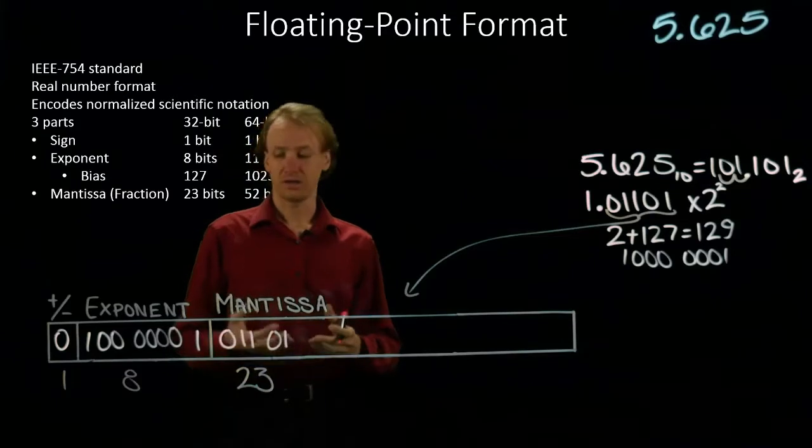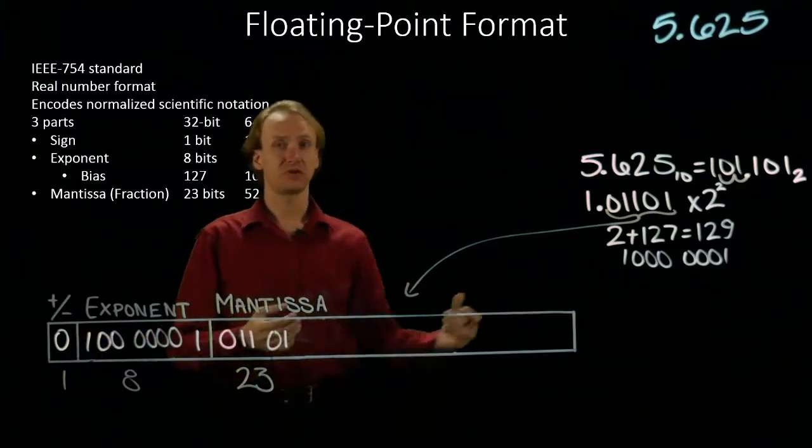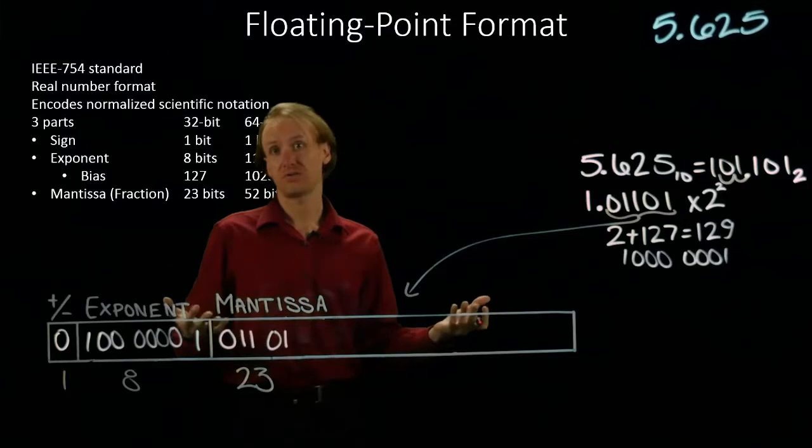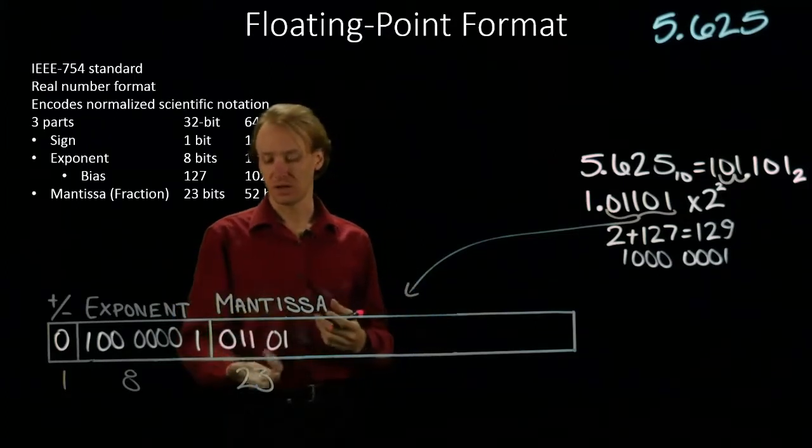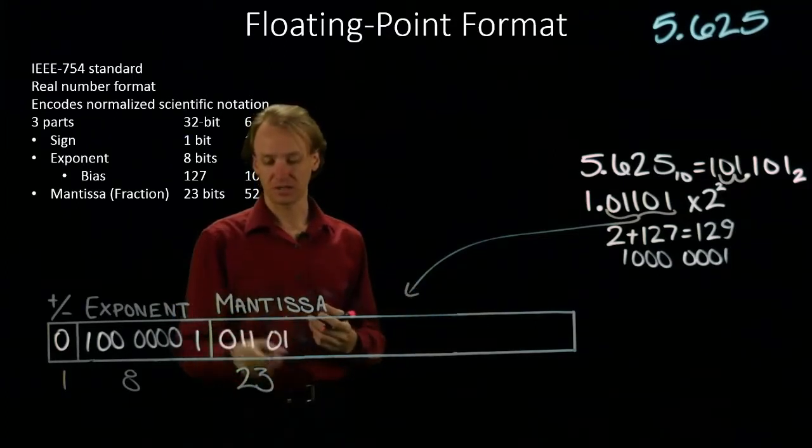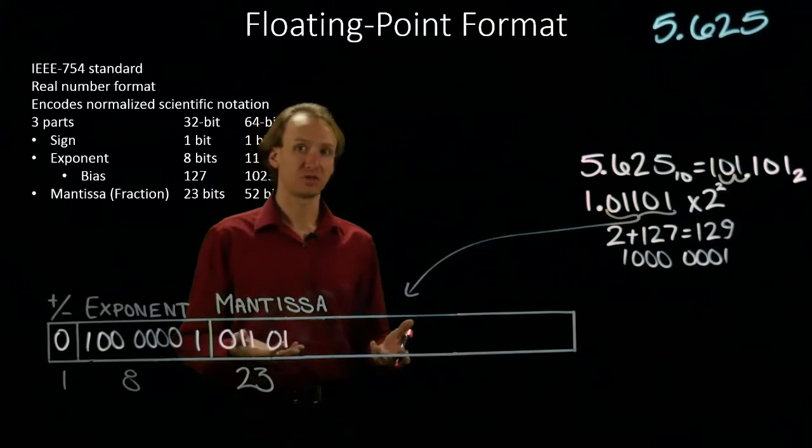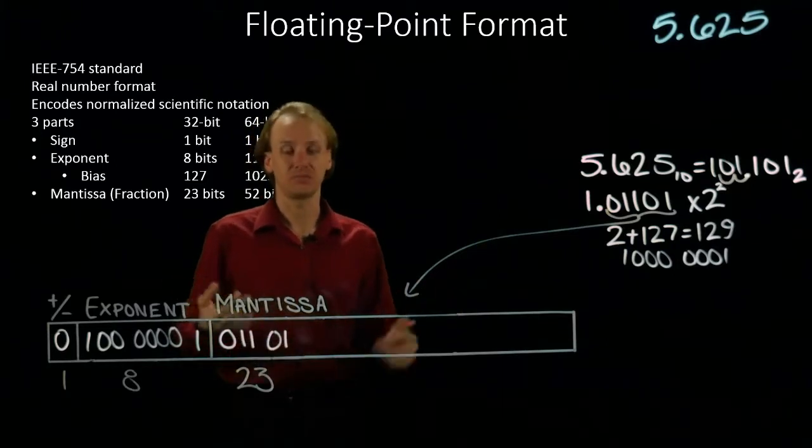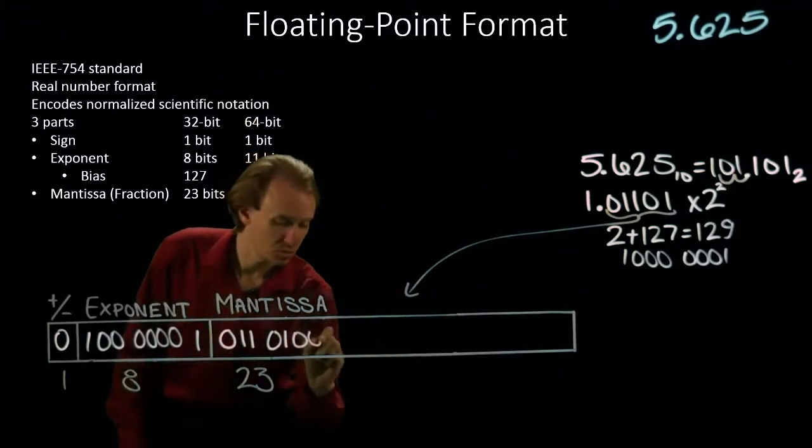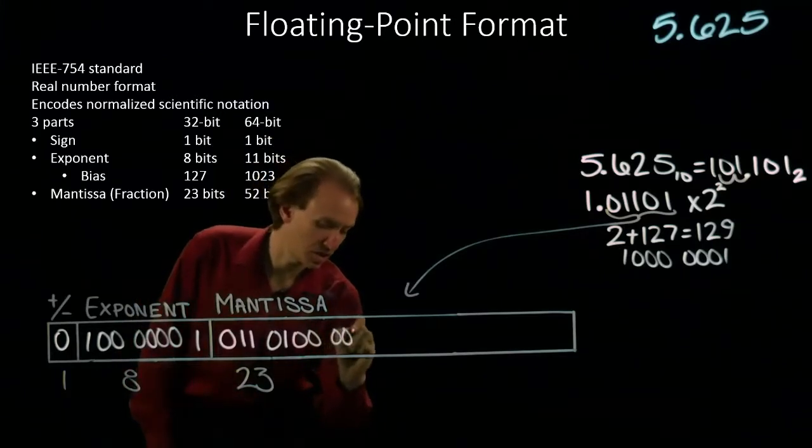Now I need a 32-bit number. So I'm going to need to fill in the right-hand side with zeros until I've got 32 bits. I have 23 bits for my mantissa. I've used five of them so far, which means I have 18 more to go. So I will just add 18 zeros to the right-hand side.